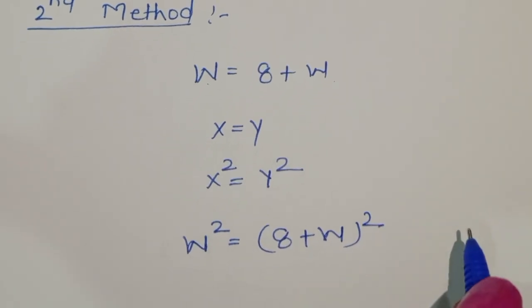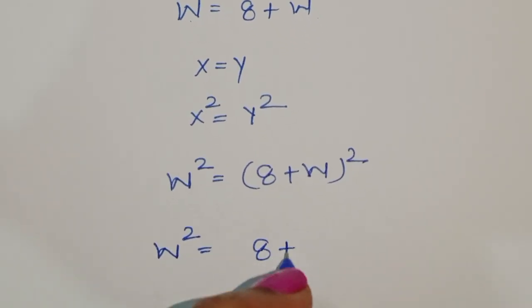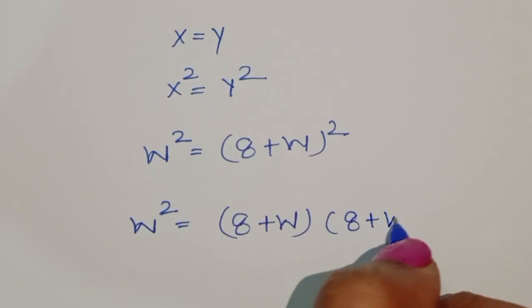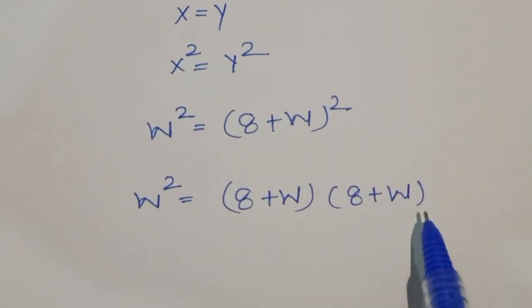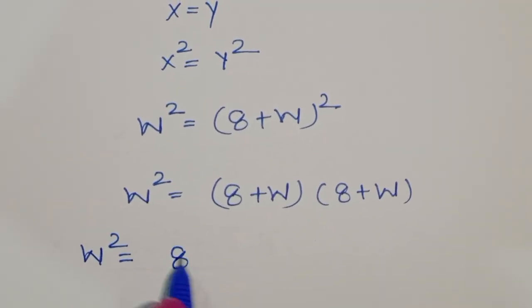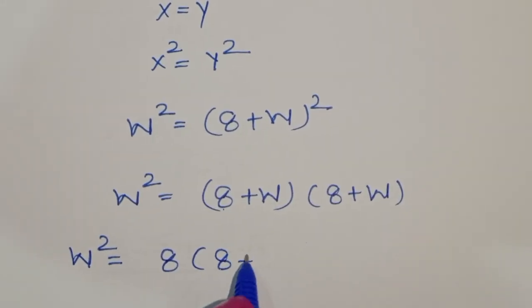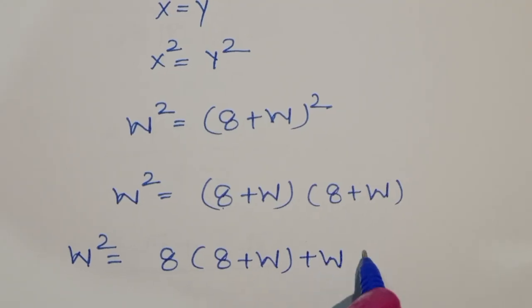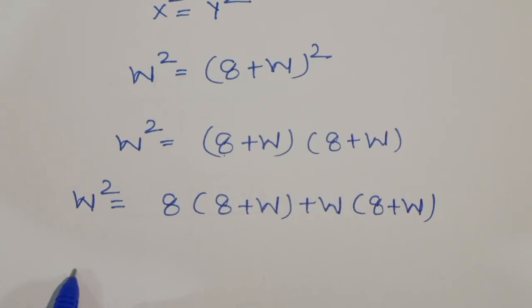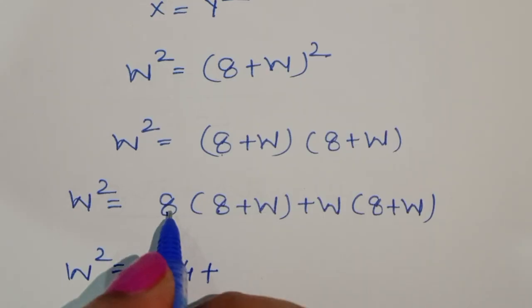So w² equals (8 + w) times (8 + w). Expanding this, we get w = 8 times 8 plus 8 times w, which gives us 64 plus 8w.